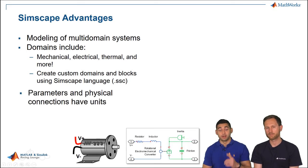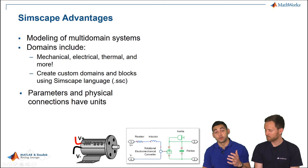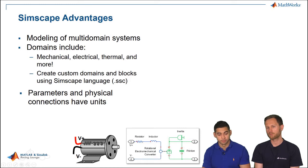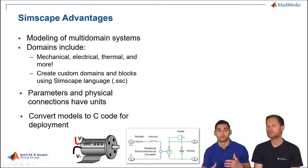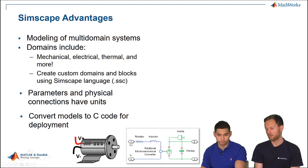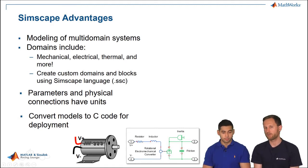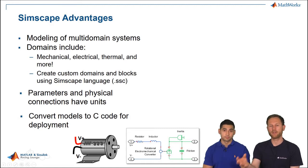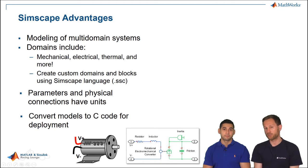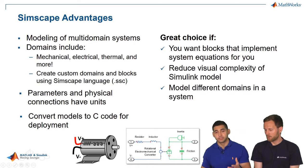Another important thing to remember: Simscape has units associated with physical connections and component parameters. Simscape is also supported for code generation for testing or deployment on hardware. This is useful when you have a prototype of a component not yet manufactured — you can deploy it onto a computer mimicking actual hardware to try out physical systems without having built them.